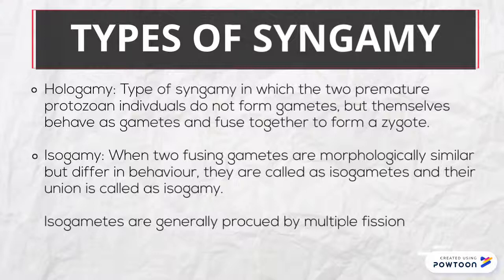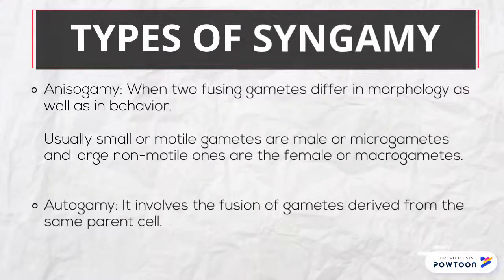In isogamy, two fusing gametes are morphologically similar but differ in behavior. When two fusing gametes differ in morphology as well as in behavior, they are called anisogamy. Usually, smaller motile gametes are male or micro-gametes, and large non-motile ones are the female or macro-gametes.